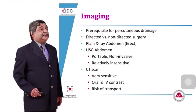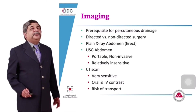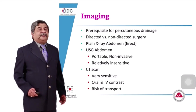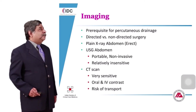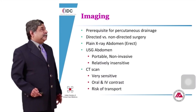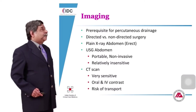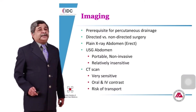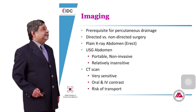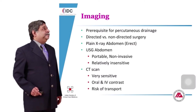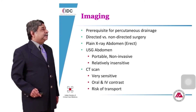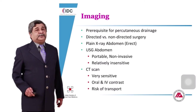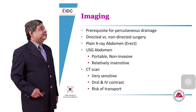Imaging also guides directed versus non-directed surgery — a directed laparotomy, where you have identified a bowel perforation, is much better than a blind exploratory laparotomy. A plain X-ray abdomen can be done if other facilities are unavailable. Ultrasound is portable and non-invasive but relatively insensitive — you might miss an abdominal source. CT scan is very sensitive; use oral and IV contrast, but be aware of the risk of contrast-induced nephropathy. CT scan also requires patient transport, so be careful as these patients are sick and unstable.